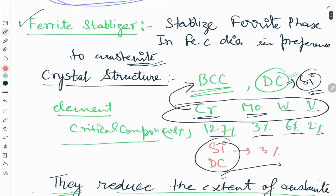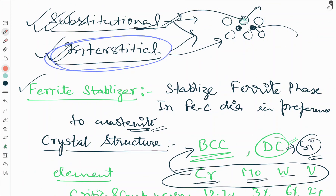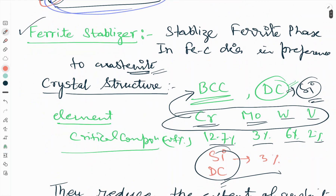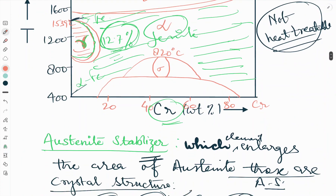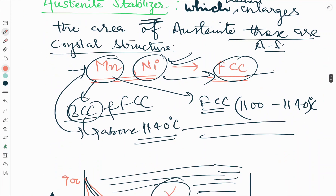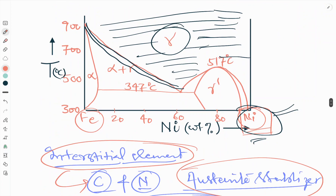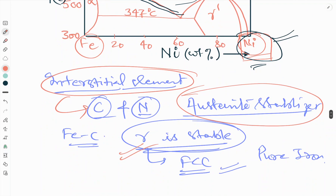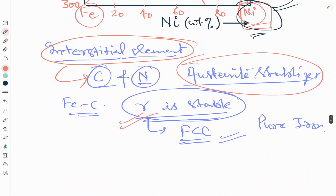This is all about today's video. We have discussed the substitutional and interstitial alloying elements and how they affect the iron-carbon diagram. Please stay connected with us. If you have any doubts, write in the comment box, and like, share, and subscribe to our YouTube channel. Thank you.